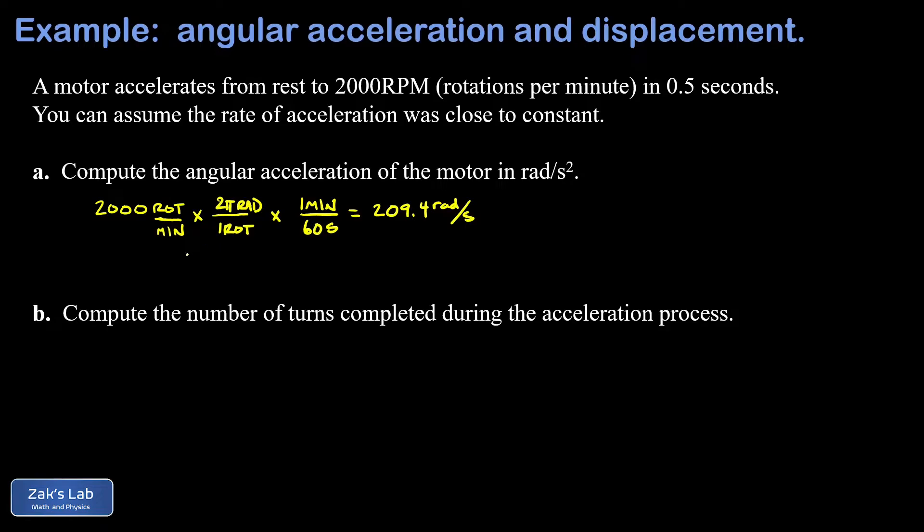Now I want that angular acceleration. Because the angular acceleration is constant, I can say the angular acceleration is given by the change in angular velocity Δω divided by the change in time Δt. My change in angular velocity: I started at 0 and ended at 209.4 radians per second, so my change is 209.4. My change in time: half of a second or 0.5 seconds. The units come out to radians per second squared. Keeping three sig figs for our final answer we get 419 radians per second squared.